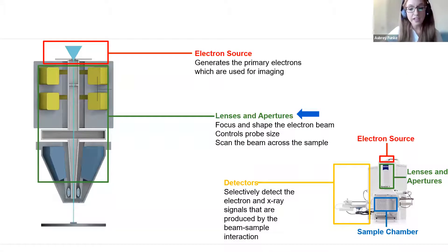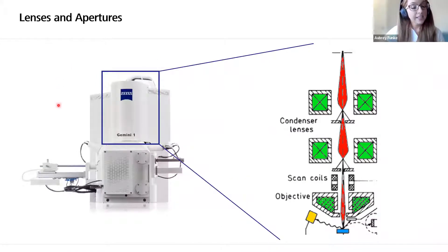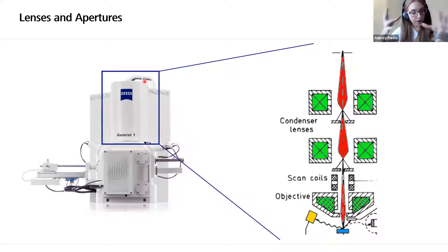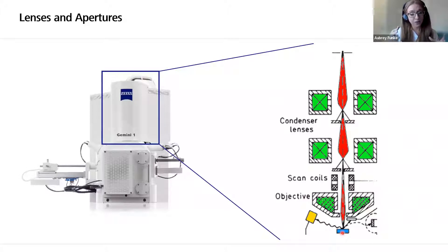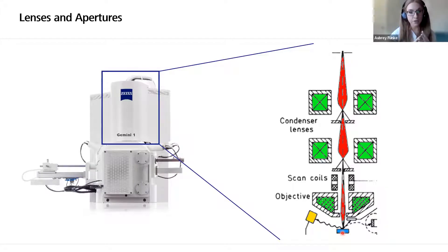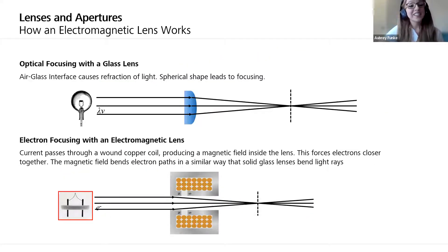Now that we know where the electrons come from, we can move on to the electromagnetic lenses and how they are used to form and focus that beam. The lenses are located in the column and are used to reduce the diameter of the beam — you want a spot as small as you can possibly get. In that very last lens, there are scan coils that take that beam and move it across the sample in that raster pattern. The lens system consists of condenser lenses, objective lenses, apertures, and those scanning coils.